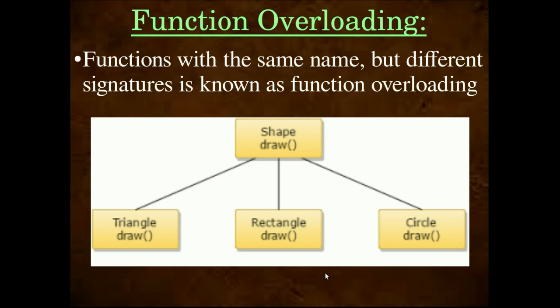Function Overloading means functions with the same name but different signatures. For example, 'draw' is a function name. You can draw a triangle, you can draw a rectangle, you can draw a circle — all using the same function name 'draw' but in different situations with different behavior. Functions with the same name but different signatures or different behavior is known as Function Overloading.